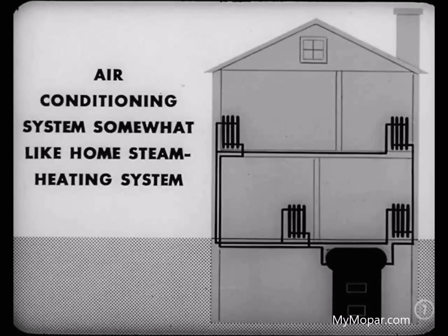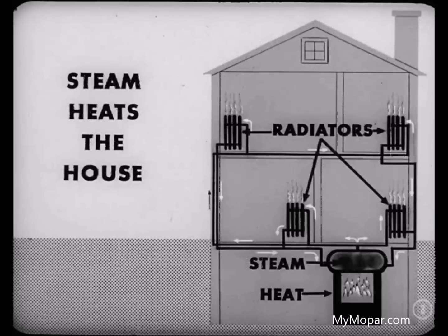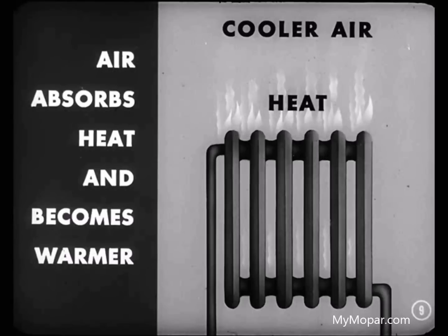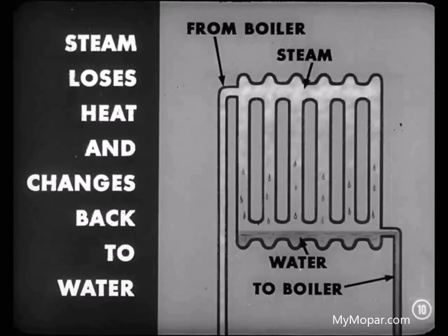Actually, an air conditioning system is somewhat like a home steam heating system, only operating in reverse. In the steam heating system, for example, you heat the water to change it into steam. Then you pipe the steam to radiators throughout the house to heat the house. The radiators get warm, and the heat from the steam is radiated to the cooler air in the house, so the air absorbs the heat and becomes warmer. As the steam loses its heat, it changes back to water and returns to the boiler, where the process starts all over again.